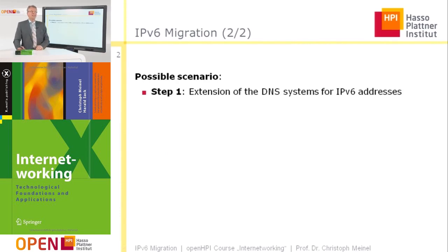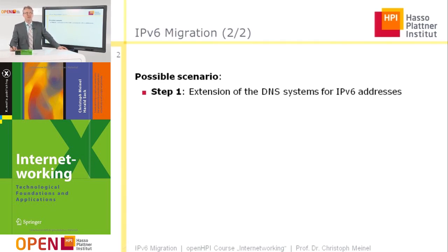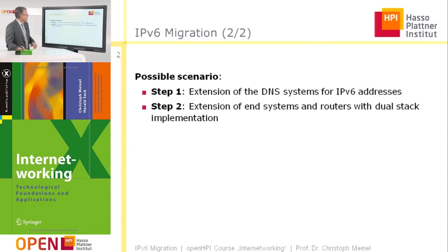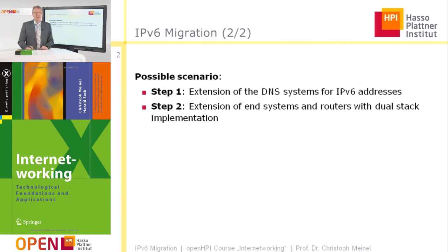What are possible scenarios for IPv6 migration? Step one would be that the DNS system — the domain name service system — is extended to be able to deal with IPv6 addresses, since they have a different format. The next step could be that the end systems and routers are prepared to also deal with IPv6 traffic, which can be done by dual-stack implementation.